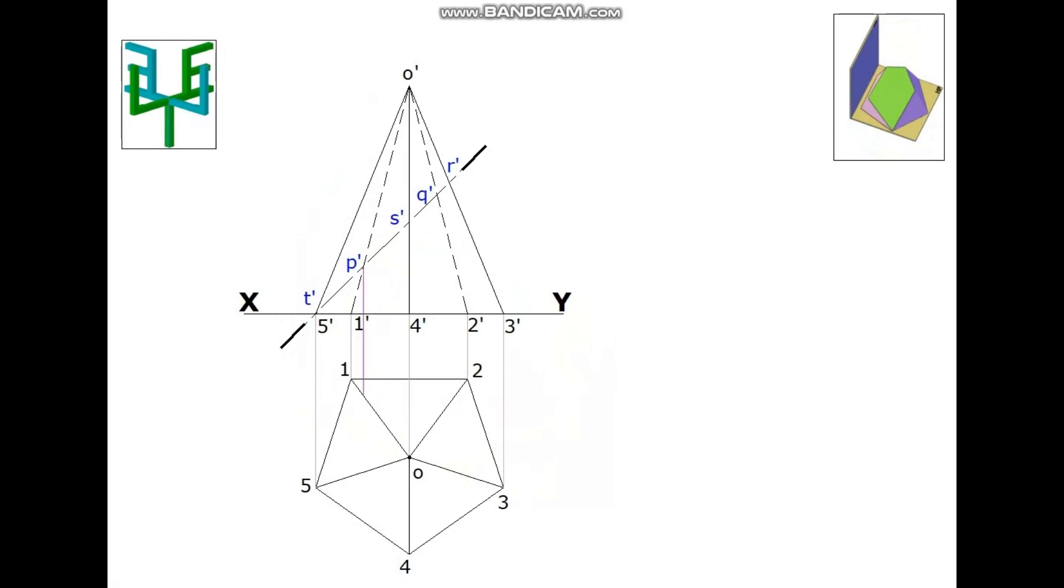Project P' dash, mark the corresponding point of the plan as P. Project Q' dash, mark the corresponding point of the plan as Q.